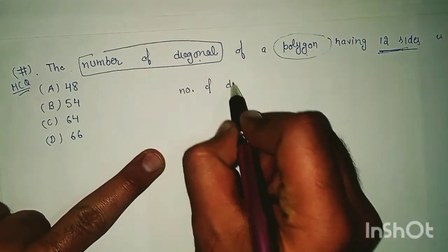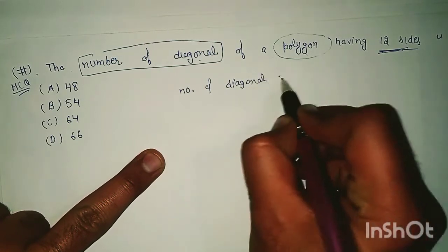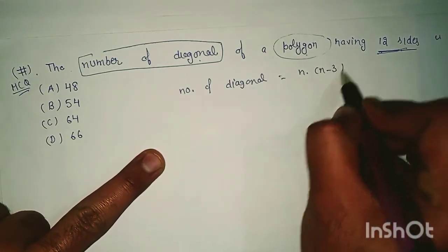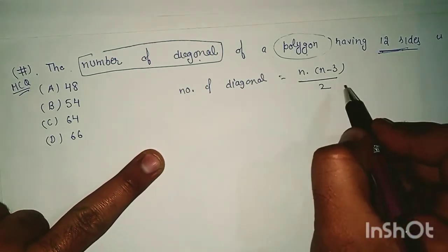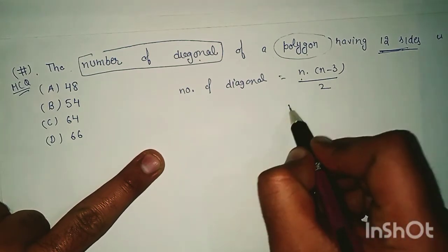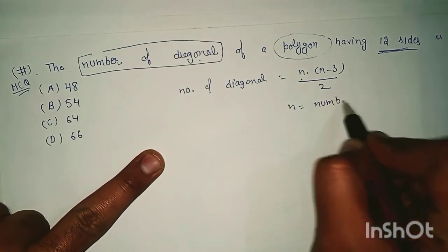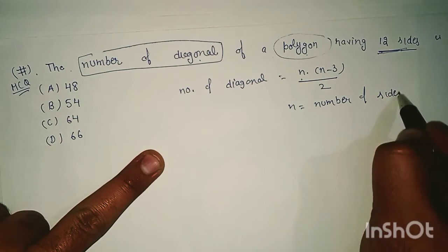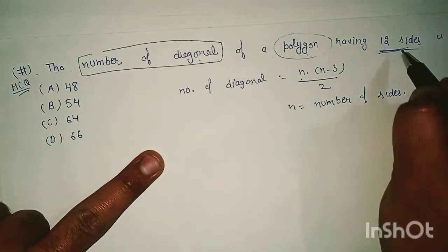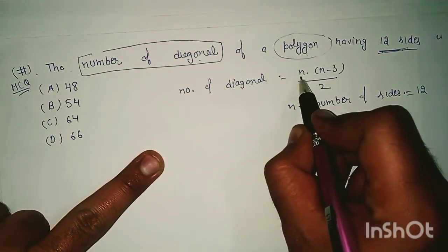So the number of diagonals is n into n minus 3 by 2. This is the formula. n is equal to the number of sides. So it means the number of sides is 12, so n is 12.